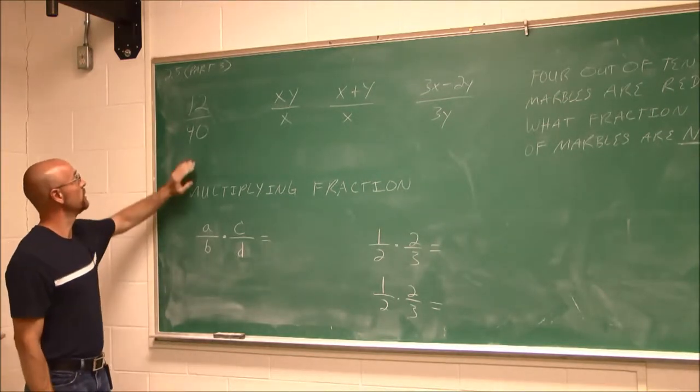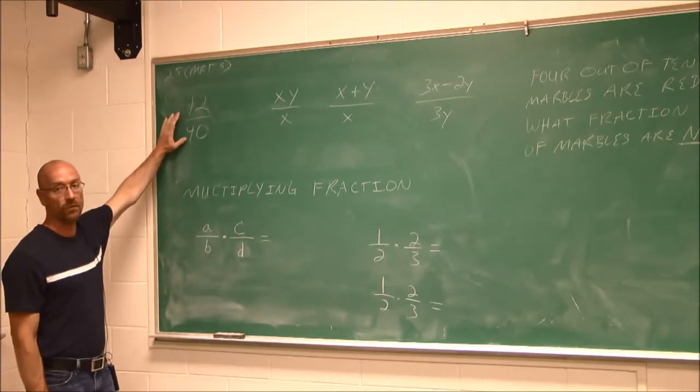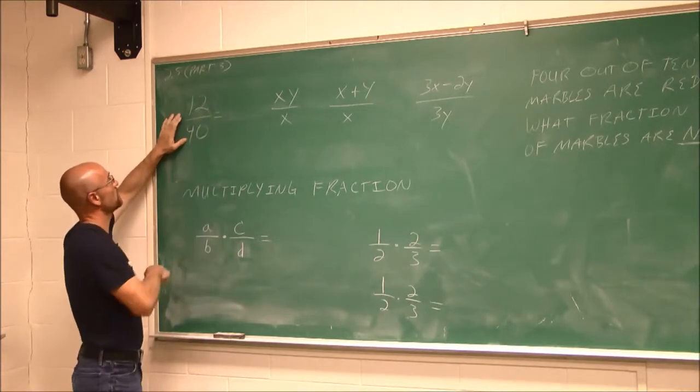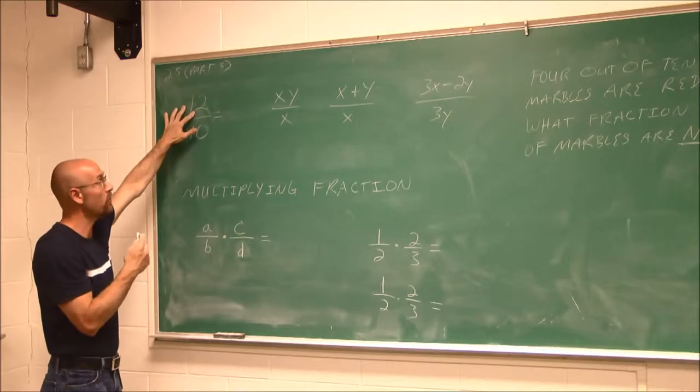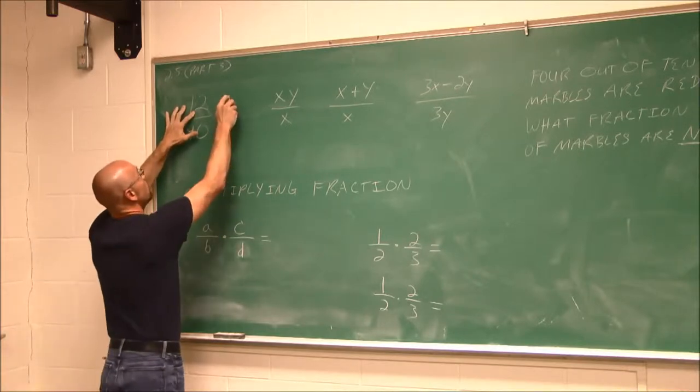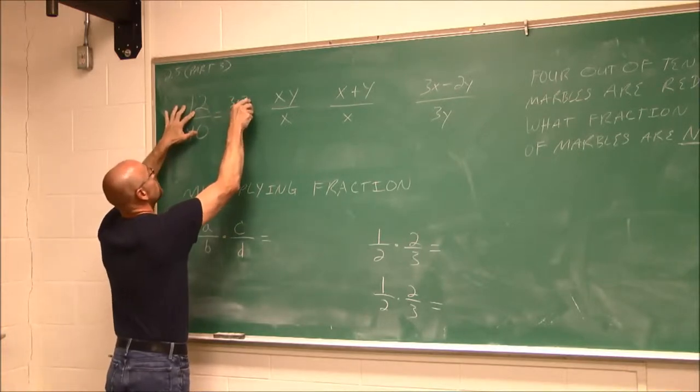In the previous video, we looked at reducing fractions and wrote them as their prime factors. I'm going to do that here as a review. It's prime factors. This would be 3 times 4, and 4 is 2 times 2, so 3 times 2 times 2.